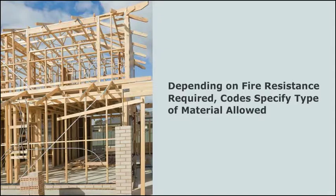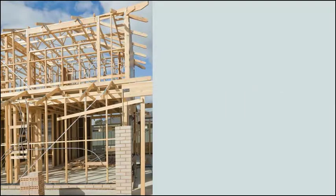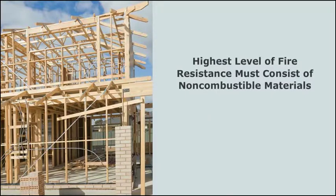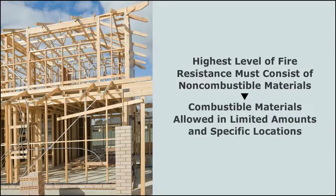For example, Type 1 construction, which requires the highest level of fire resistance, must consist almost completely of non-combustible materials. Combustible materials are only allowed in limited amounts and specific locations.